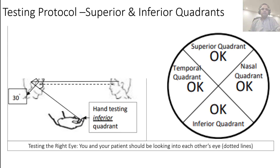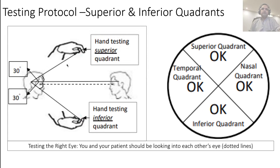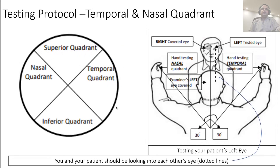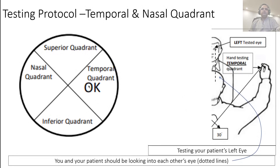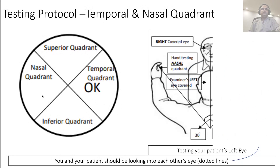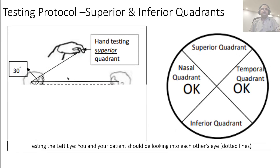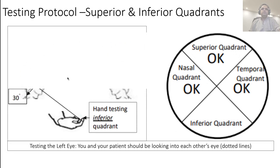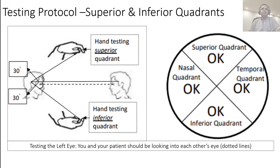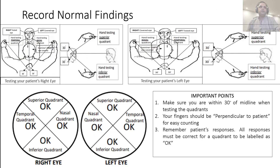If the patient counts all fingers correctly both times, write 'okay.' Right eye testing is now complete. Then proceed to the left eye in the very same way: temporal quadrant first, then nasal quadrant, make mental notes or write them down, do the superior quadrant, then the inferior quadrant, and record your findings.